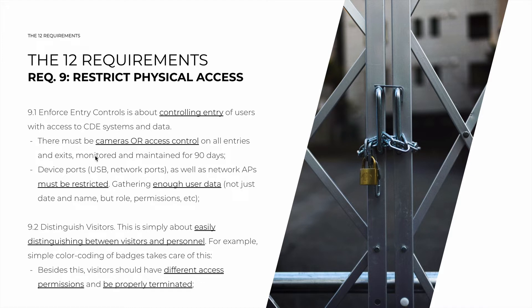Note that this also includes securing device ports, such as USB or network ports, where an attacker could install a keylogger or another device, as well as restricting access to network access points. It's also important to gather enough user data on people that enter — not just a paper sheet with a date and name, but their role, their permissions, their specific purpose, and more. It has to be more granular.